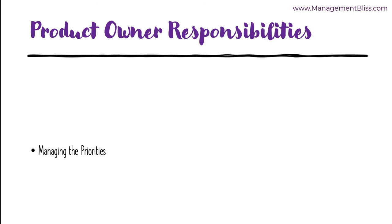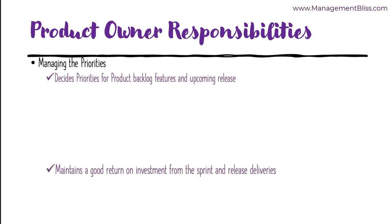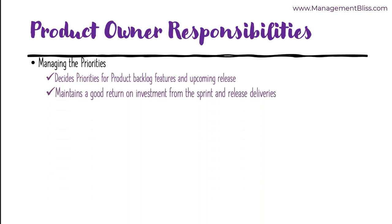Moving on to Product Owner Responsibilities. Managing the Priorities: A Product Owner is responsible for defining the priority for the Product Backlog Features and upcoming release work. He is the one who takes the required decision on what goes out and when. A Product Owner also keeps a keen eye to maintain good return on investment from sprint and release deliveries.